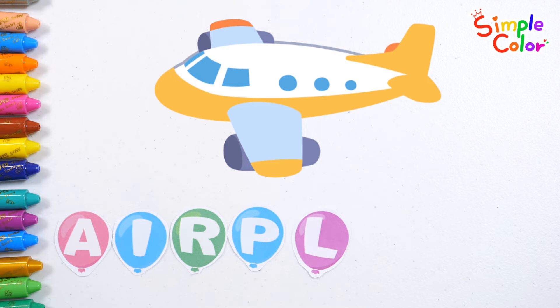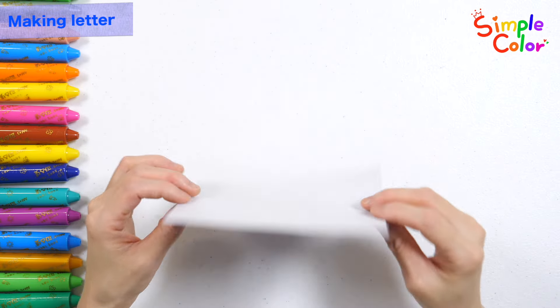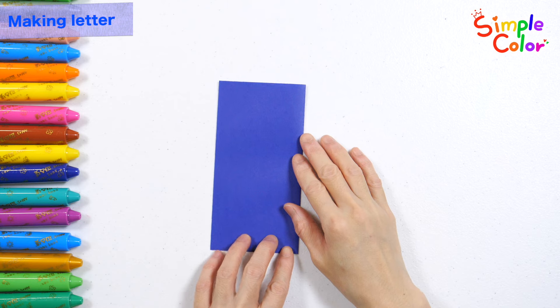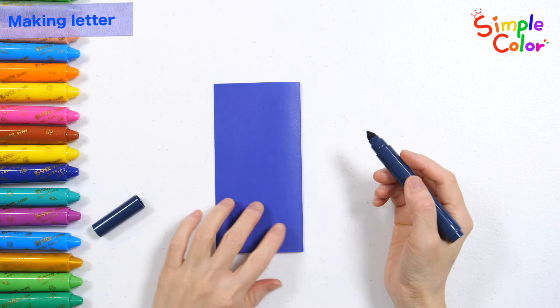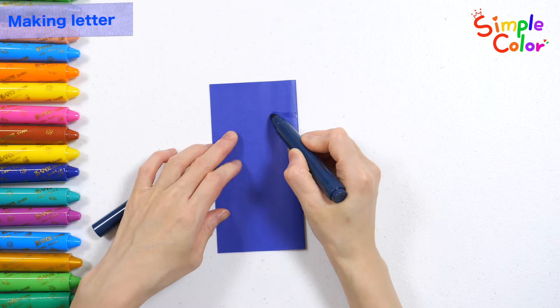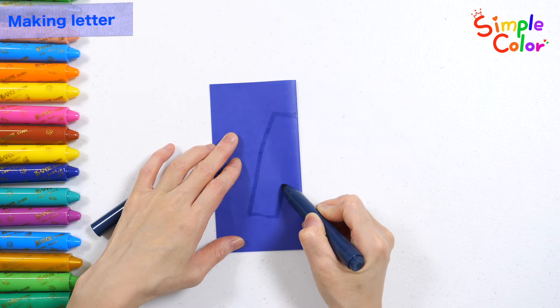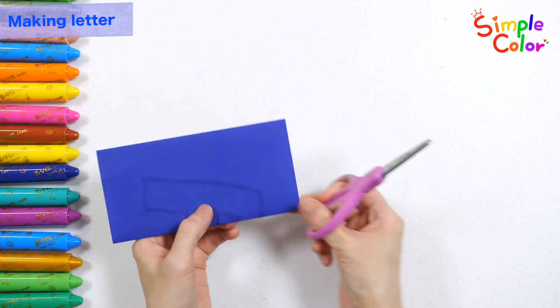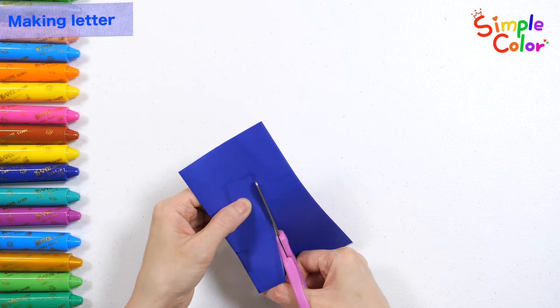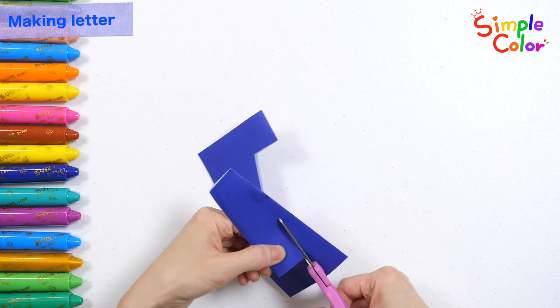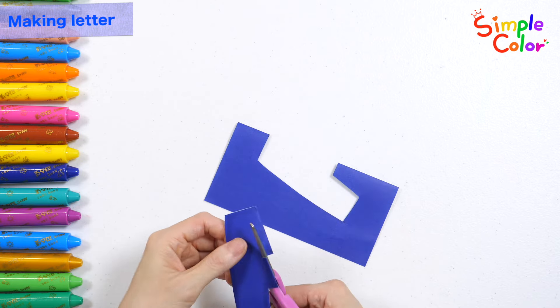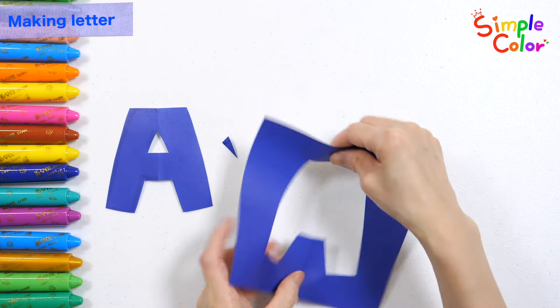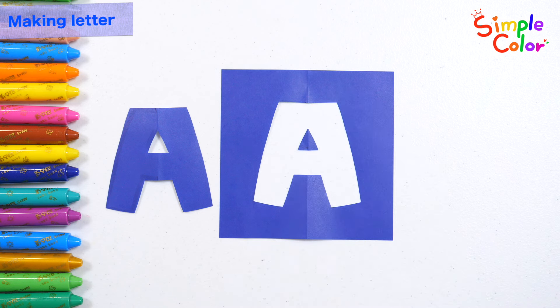Oh, here are some indigo colored paper. Shall we make letters out of colored paper? First, fold the paper in half. What letter will it become? Cut it out and see. It's the letter A.